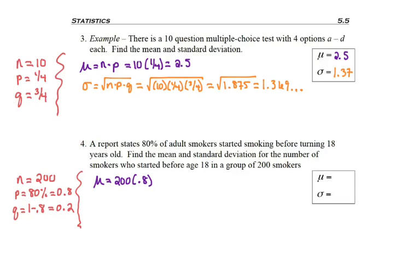So for the mean, I multiply n and p, and 80% of 200 people is 160 people. This one just worked out to be a whole number. That's fine. So 160 people in that room probably, or on average would say, if we had a bunch of rooms of 200 people, on average would say, I started smoking before I turned 18.